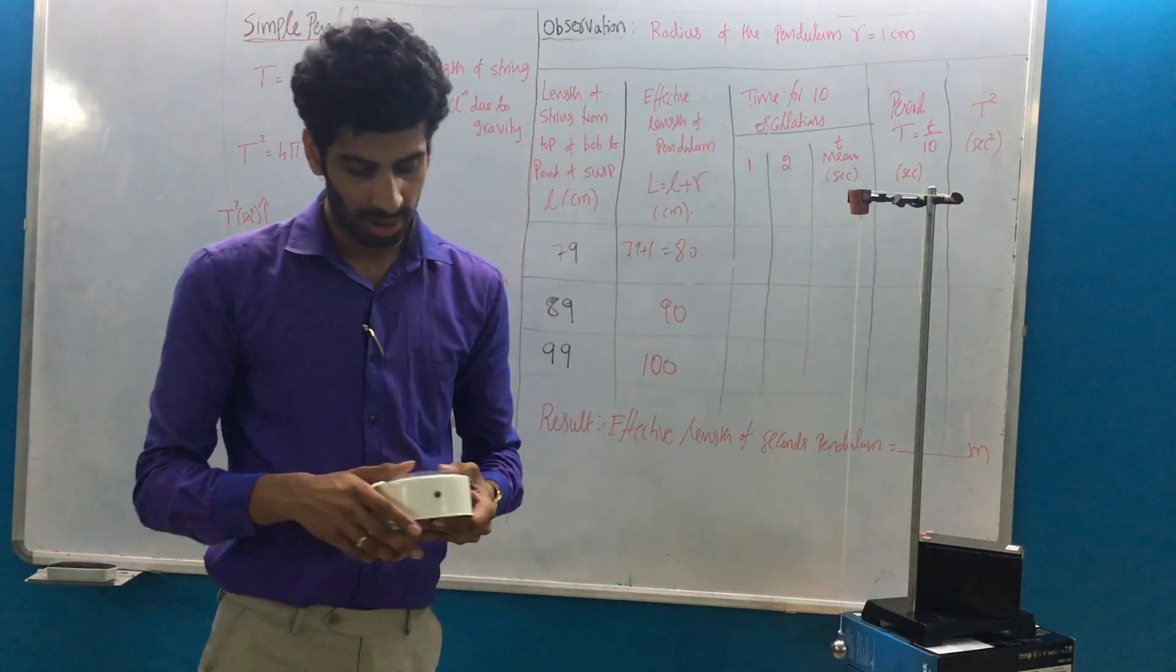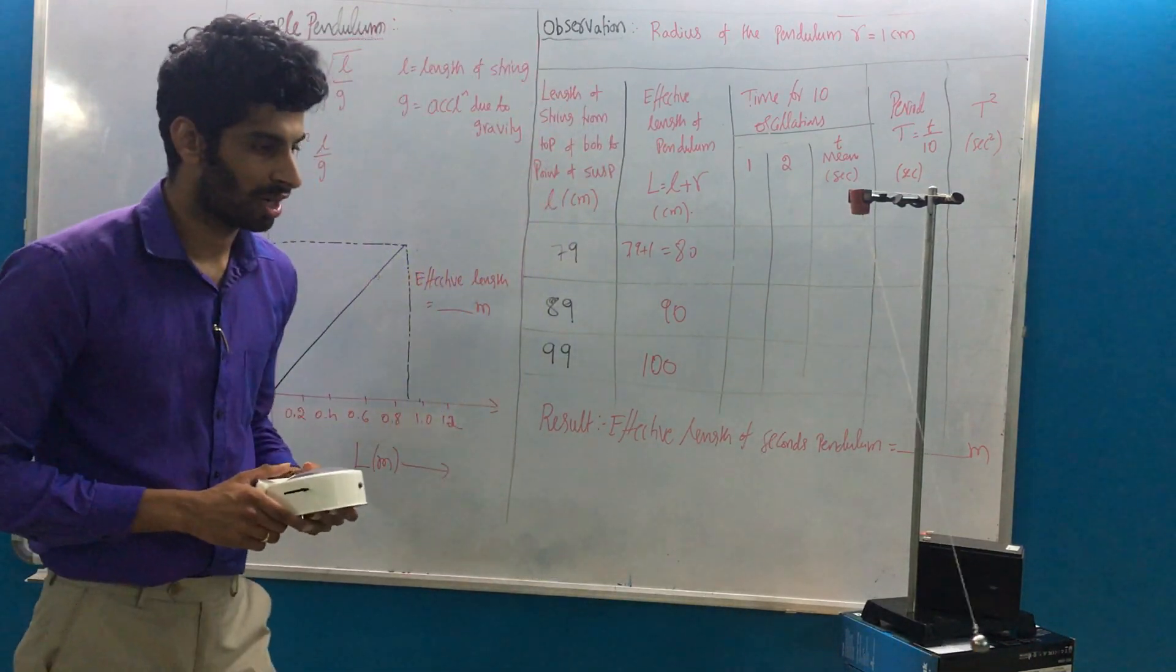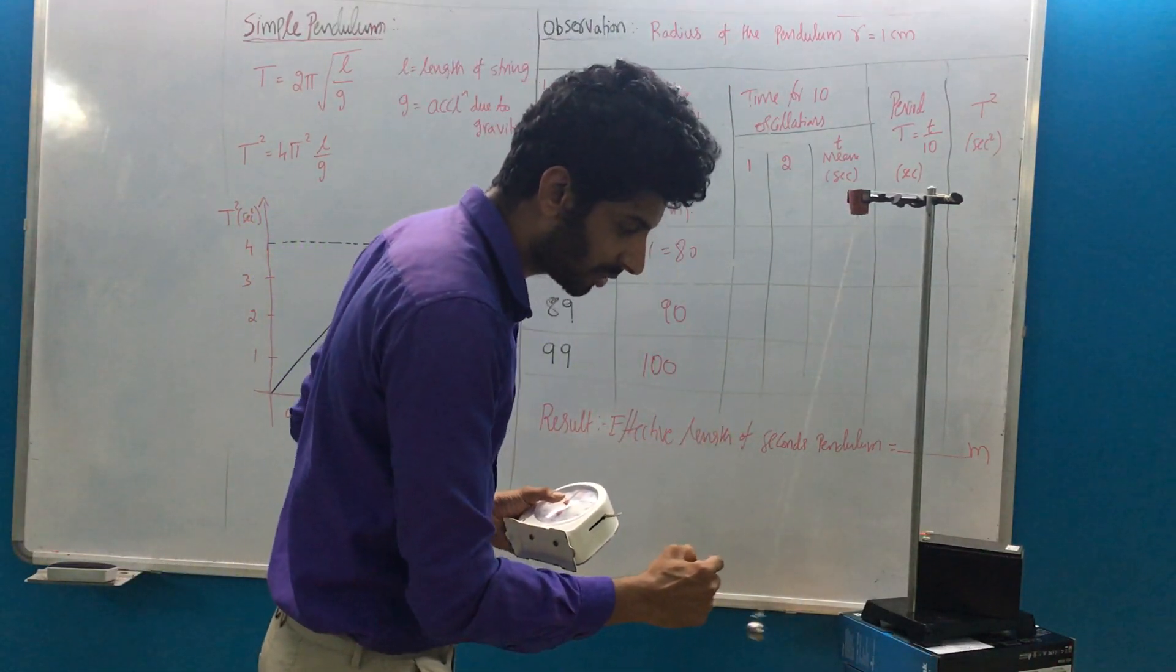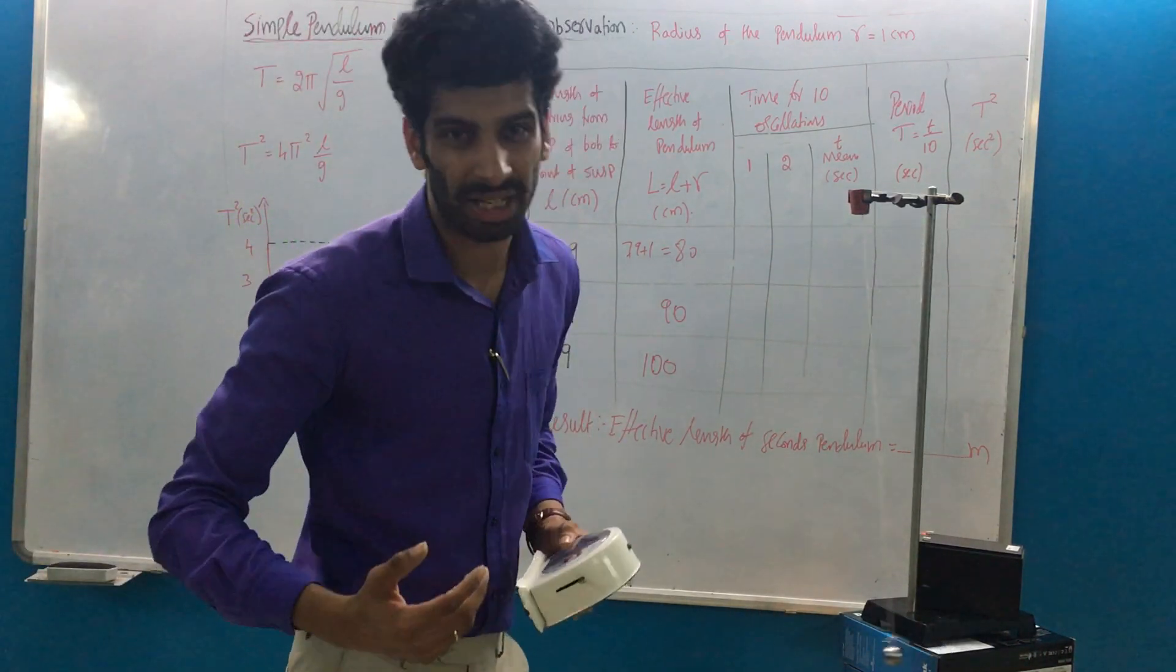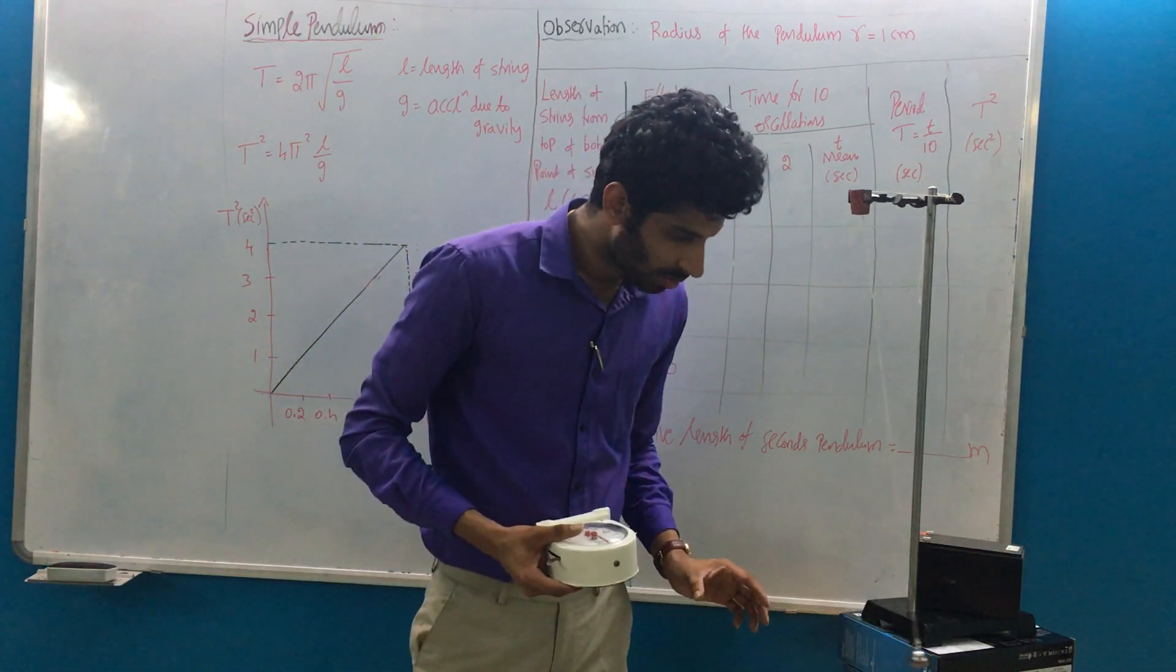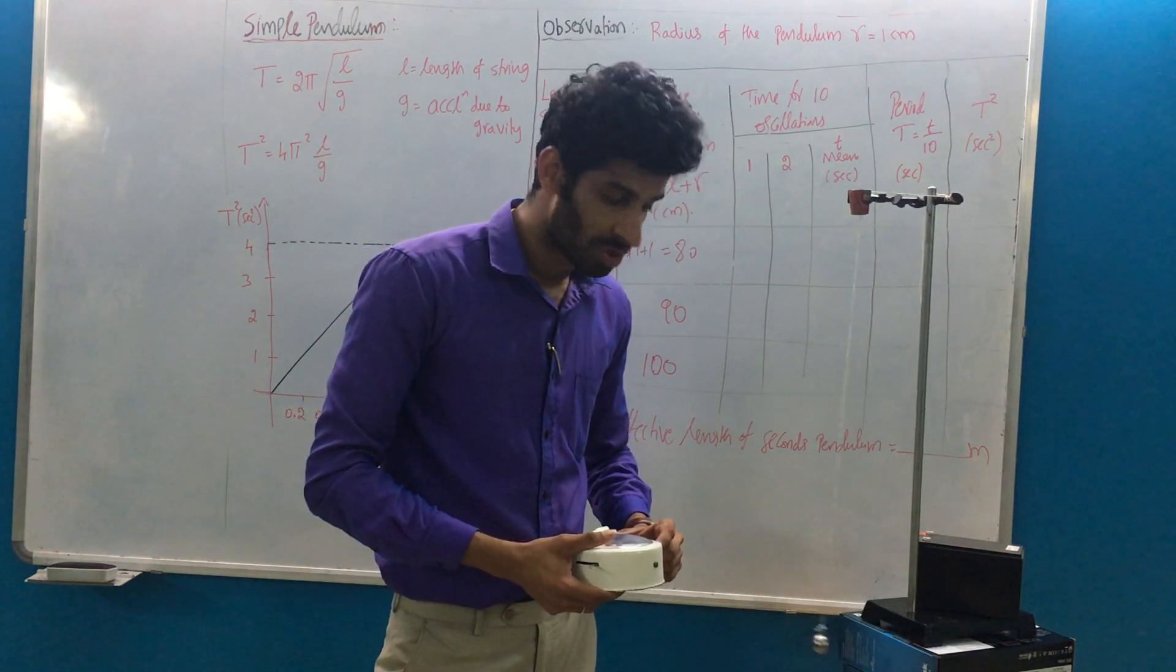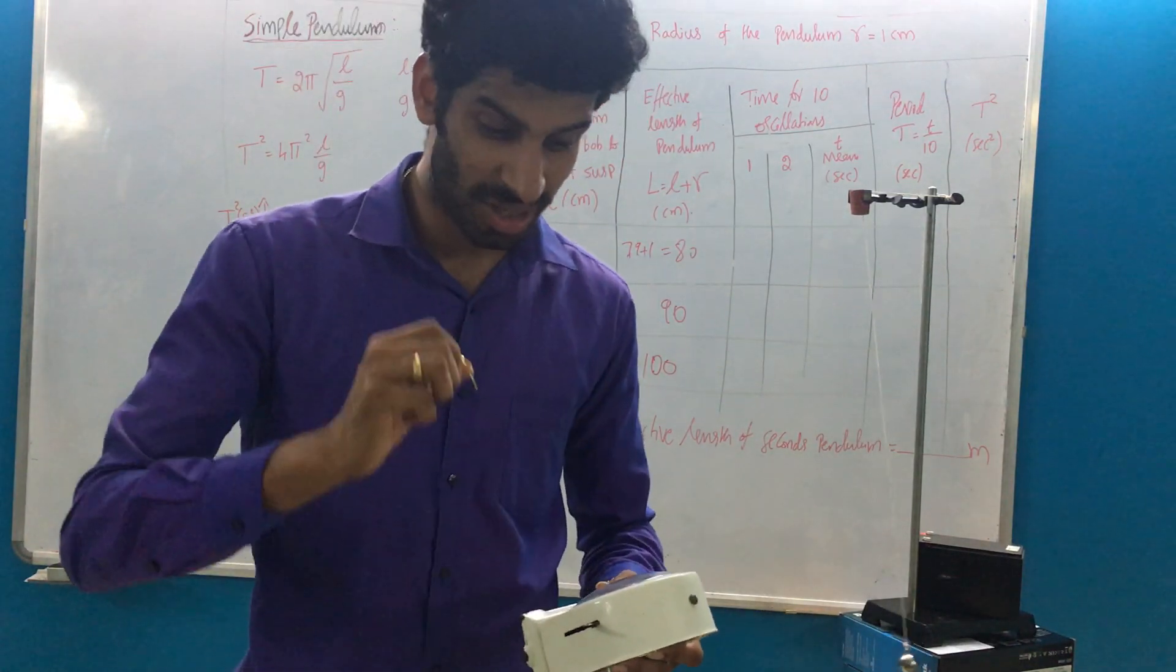There is a clock which will measure the time. I'm just going to give it a small oscillation. I'll start from this extreme, and when it comes back to the same position I can say that one oscillation is done. I have to count what is the time taken for ten oscillations. One, two, three, four, five, six, seven, eight, nine, ten. It shows 15 seconds.